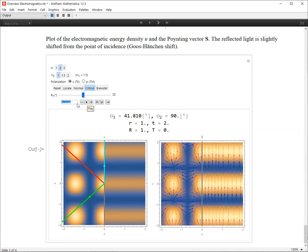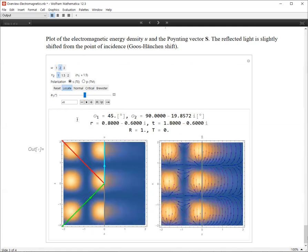Well, when theta one is larger than the critical angle, for example, at 45 degrees. Oh, I'm sorry. I have to change. So locate 45. Then you can see that this is completely reflective. So you can see reflectivity, reflectance is one and T equals zero, which means that there is no transmission. And the power is in this direction.